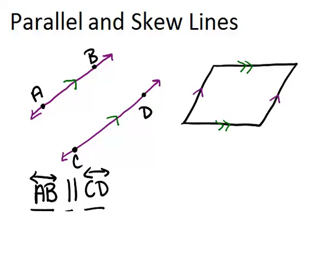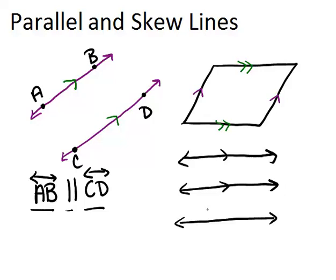One interesting thing about parallel lines is that they hold or have a transitive property. What I mean is, if we have a first line which is parallel to a second line, and this second line is parallel to a third line, then that means that all three of these lines are parallel.